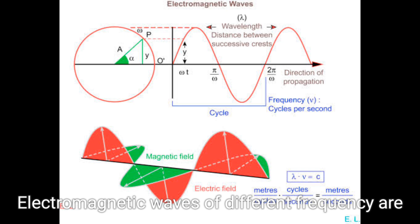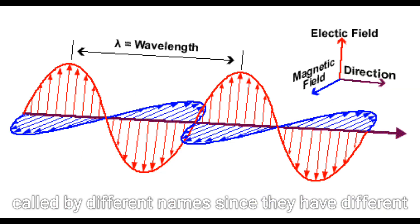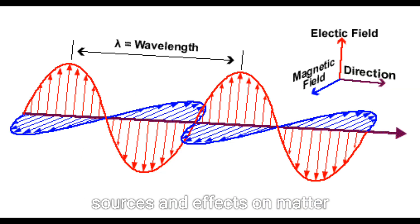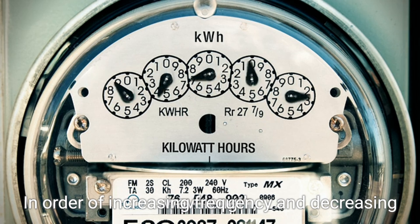Electromagnetic waves of different frequency are called by different names since they have different sources and effects on matter. In order of increasing frequency and decreasing wavelength,